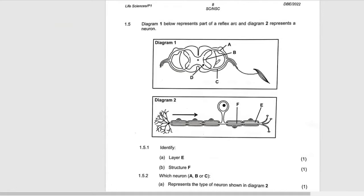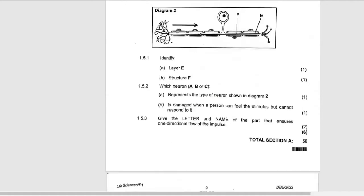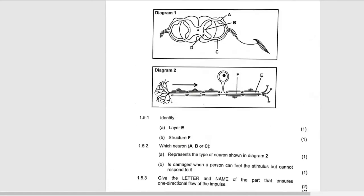You have here a ganglion, therefore it becomes sensory neuron, becomes connector neuron, becomes motor neuron, and then this space becomes the synapse.